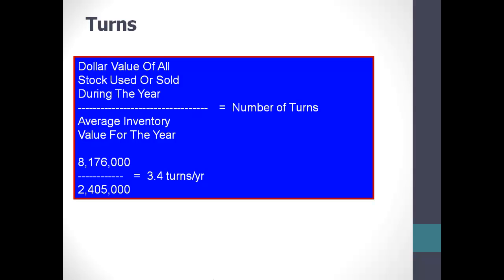The cost of goods sold number can include items you sold but never actually handled. For example, if your organization drop ships things — you act as a middle person, buying here and dropping off there — that would go into the numerator, the dollar value of all items sold or used during the year, but you never touched it. So dividing it by the average inventory value of what you had in the house on an ongoing basis is a fairly meaningless number.